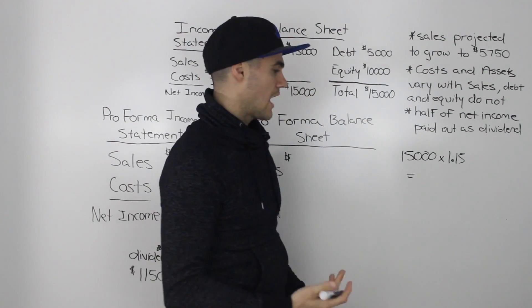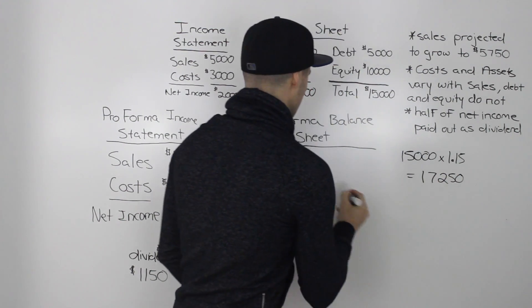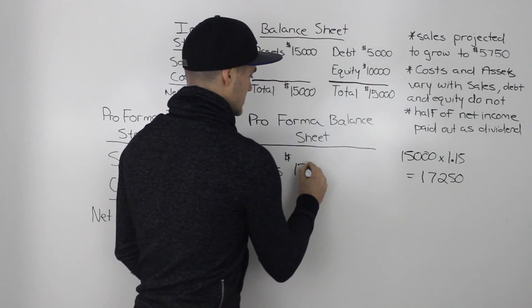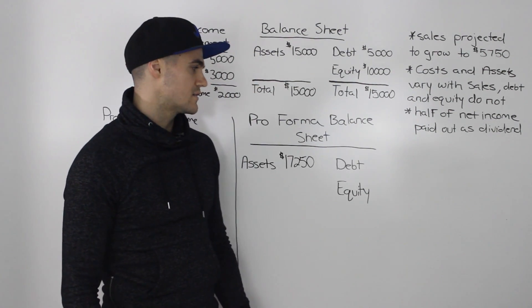And if you plug that into your calculator, you would get $17,250. So we know that that's going to be the assets for next period. And here's where it gets different.